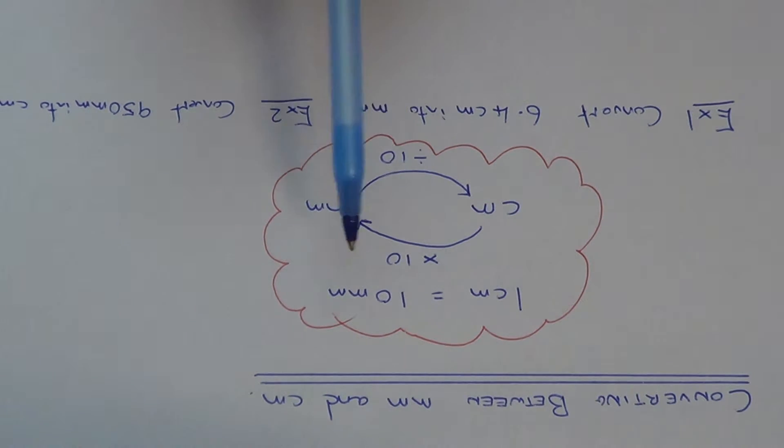The first thing you need to know is that there are 10 millimeters in a centimeter. So if we are going from centimeters into millimeters we need to multiply the number by 10. And if we are converting the number back from millimeters into centimeters we need to divide by 10.